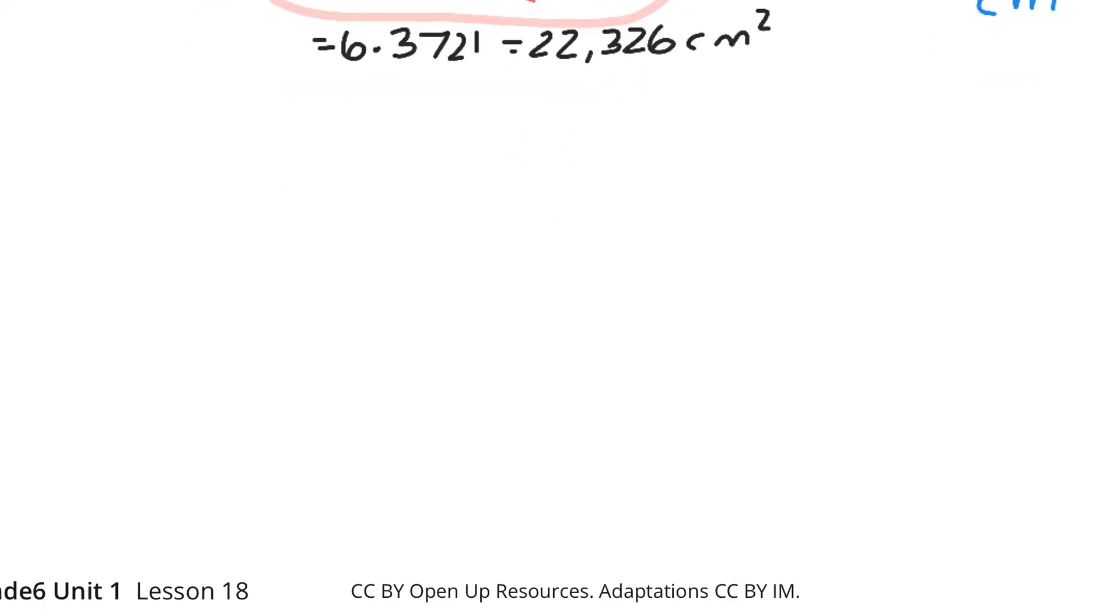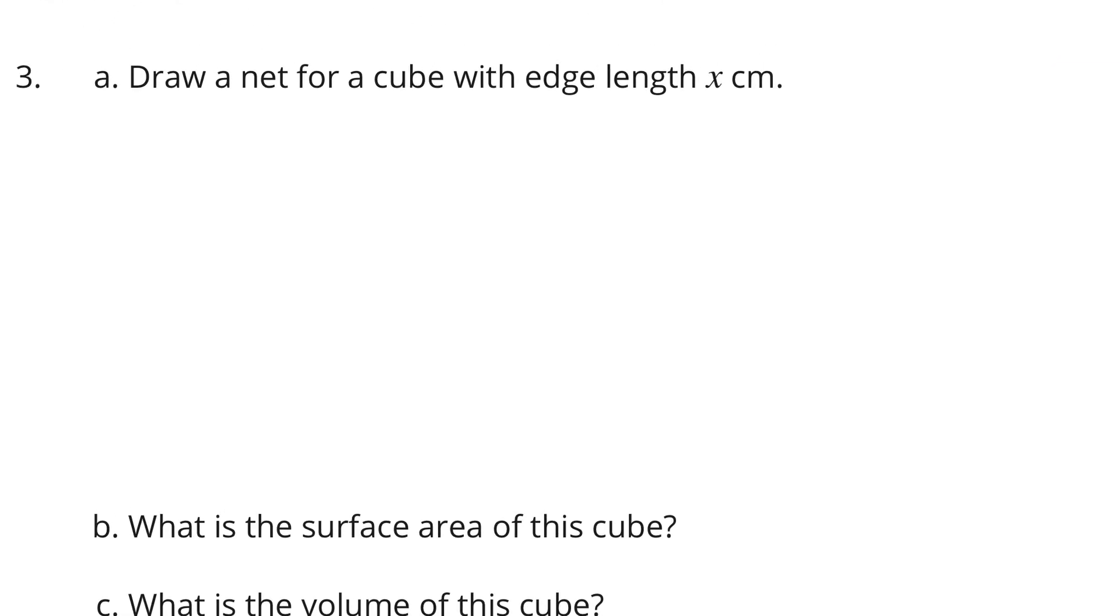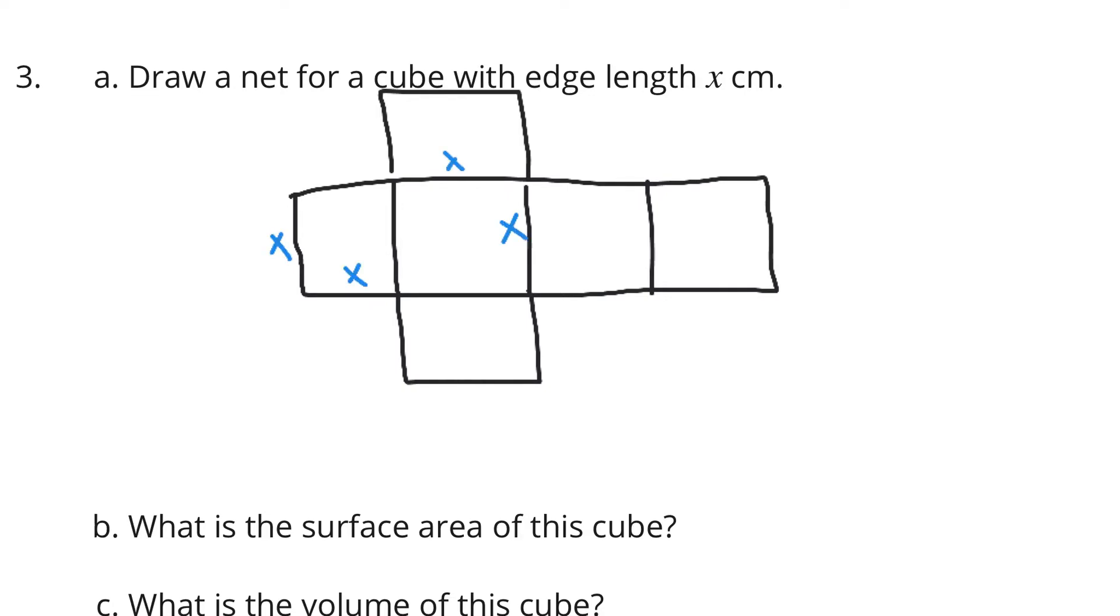All right, question three. Draw a net for a cube with edge length x centimeters. One thing I like doing, knowing that there's going to be 6 sides here, is I start off with a bit of a rectangle here. And I try to divide these as equally as I can. And not the perfect shape, but again, it's still going to be our 6 squares here. An edge length of x centimeters, well, x, x. Every one of these is x.